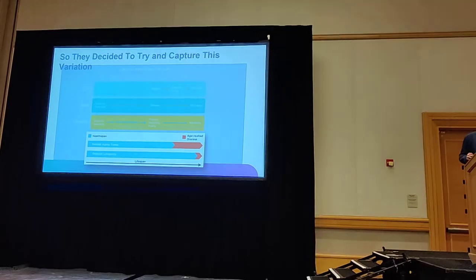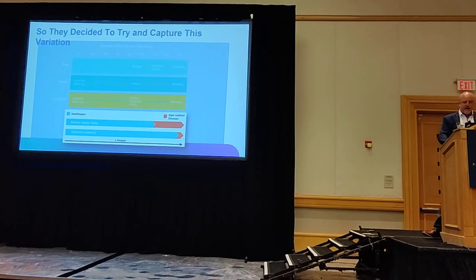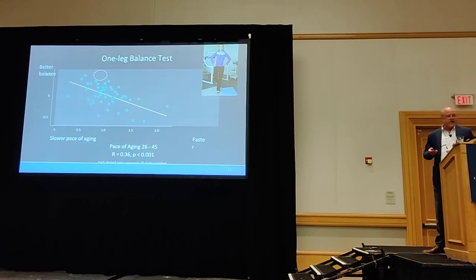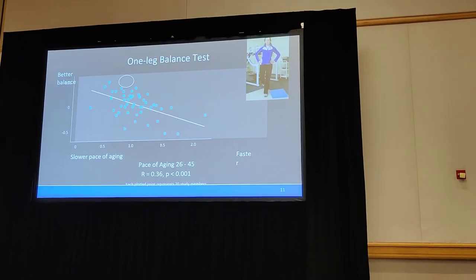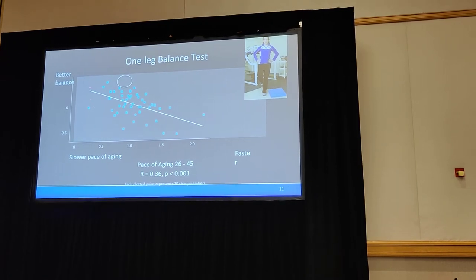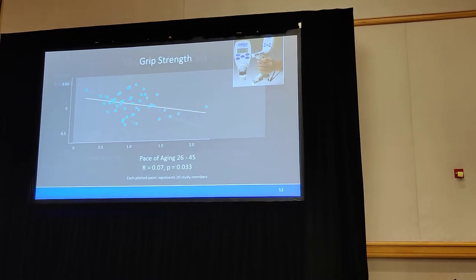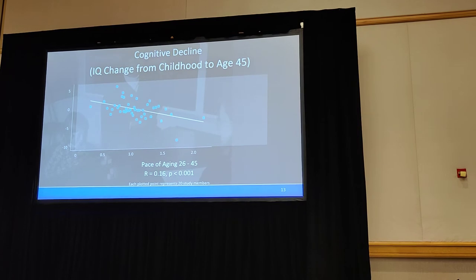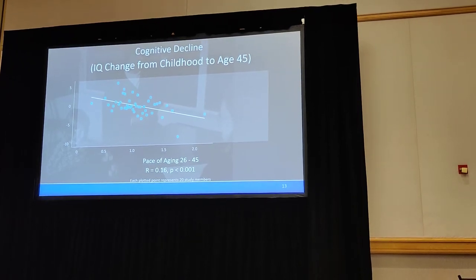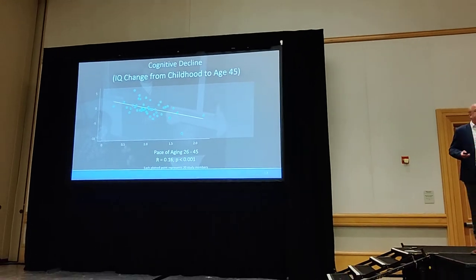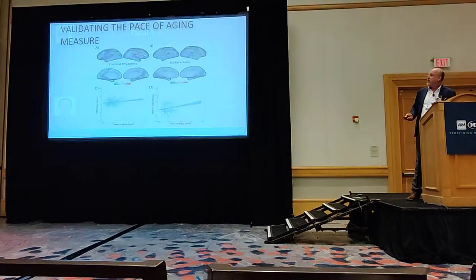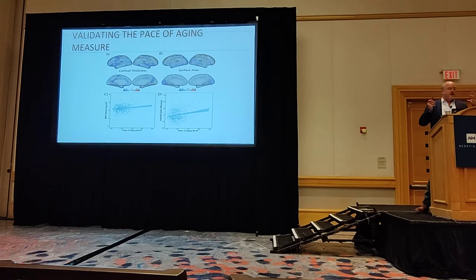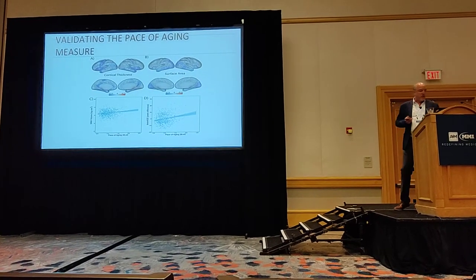The algorithm was able to see this very clearly. They calibrated it to grip strength — classically used in aging studies — cognitive decline, IQ change from childhood to age 85, and facial aging. The faster you're aging, the faster the cognitive decline. The volume of the brain is also strongly correlated to pace of aging.